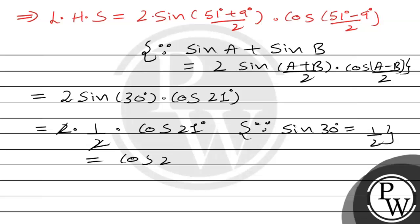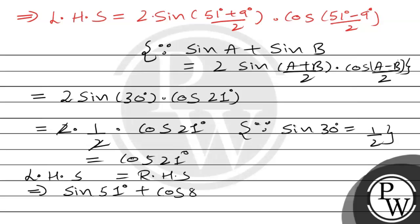This equals cos 21°, which is our right-hand side. Therefore, left-hand side = right-hand side, which implies sin 51° + cos 81° = cos 21°. Hence, we have proved that sin 51° + cos 81° = cos 21° using our key concepts. I hope you understood it well. All the best. Thank you.